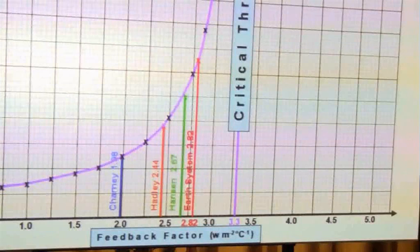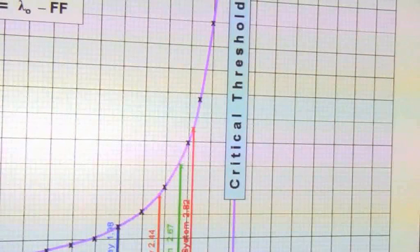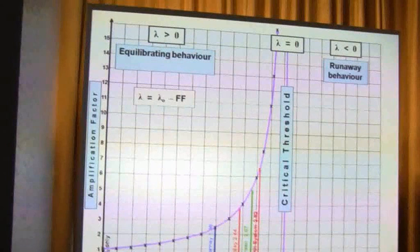And referring back to the runaway car parable, that is the accelerator, the strength of the accelerator system. The critical threshold of 3.3 watts per square meter, that is the damping system, the braking system.